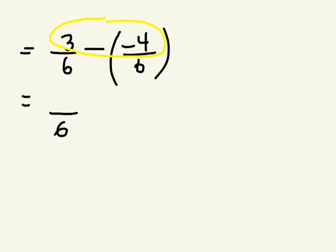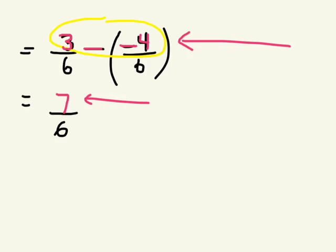The denominator stays as it is. What's the answer to 3 take away negative 4? You'd get 7. So 7 over 6. But this is an improper fraction, because the numerator is larger than the denominator. So we have to turn this into a mixed number.